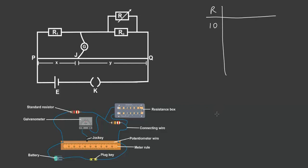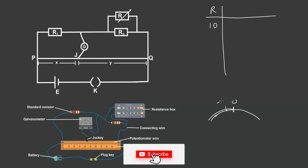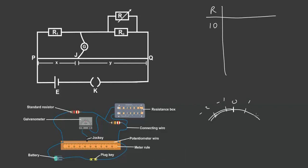Typically, the center of the galvanometer is zero. When you move to the left you get negative numbers like minus one, minus two, and on the right you have positive numbers like one, two, three. If the galvanometer indicator is exactly on zero, that indicates there is no current flowing through the galvanometer. You adjust the jockey until the indicator is exactly on zero, meaning there's no flow of current through the galvanometer.